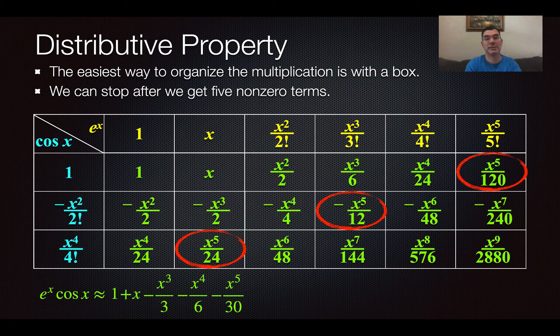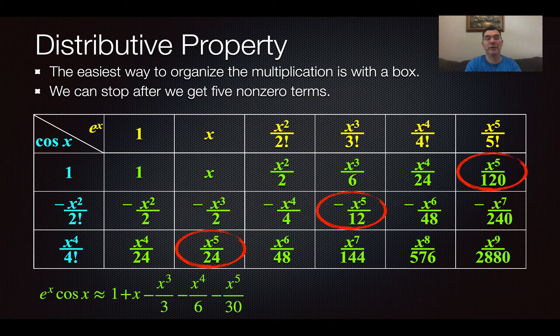So that's the process. I would organize it with a box because it is distributive property with a lot of terms in both sets of parentheses. So you've got a lot of multiplications. It's easy to miss a term or two and get a bad answer out of it. So I highly recommend the box method for doing this. If you have any questions, please let me know, and I will see you tomorrow.